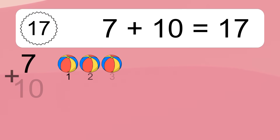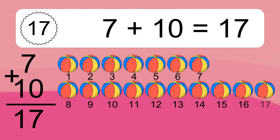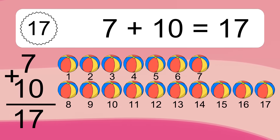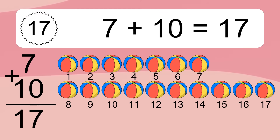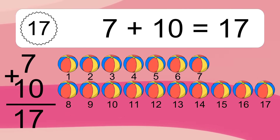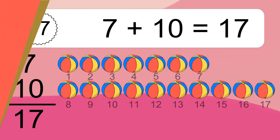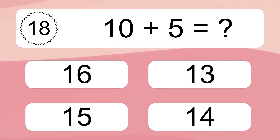7 plus 10 equals what? 7 plus 10 equals 17. Let's count it: 1, 2, 3, 4, 5, 6, 7, 8, 9, 10, 11, 12, 13, 14, 15, 16, 17.